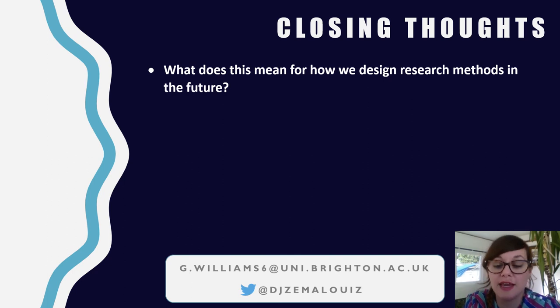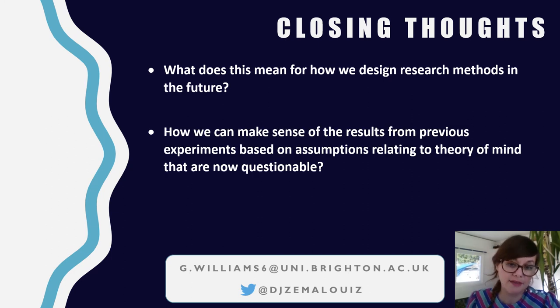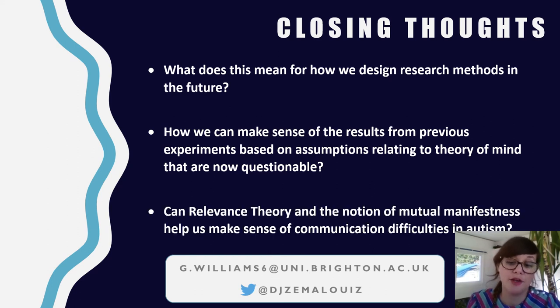Okay, so my closing thoughts: What does all of this mean, particularly the start of the presentation—what does it mean for how we design research methods in the future when it comes to autistic language communication? How can we make sense of the results from previous experiments based on assumptions relating to theory of mind that are now questionable? And can relevance theory and the notion of mutual manifestness help us make sense of communication difficulties in autism? I think so. I would like to try and investigate that further. So thank you very much for your time. That's it, do get in touch if you'd like to, and keep on keeping on.